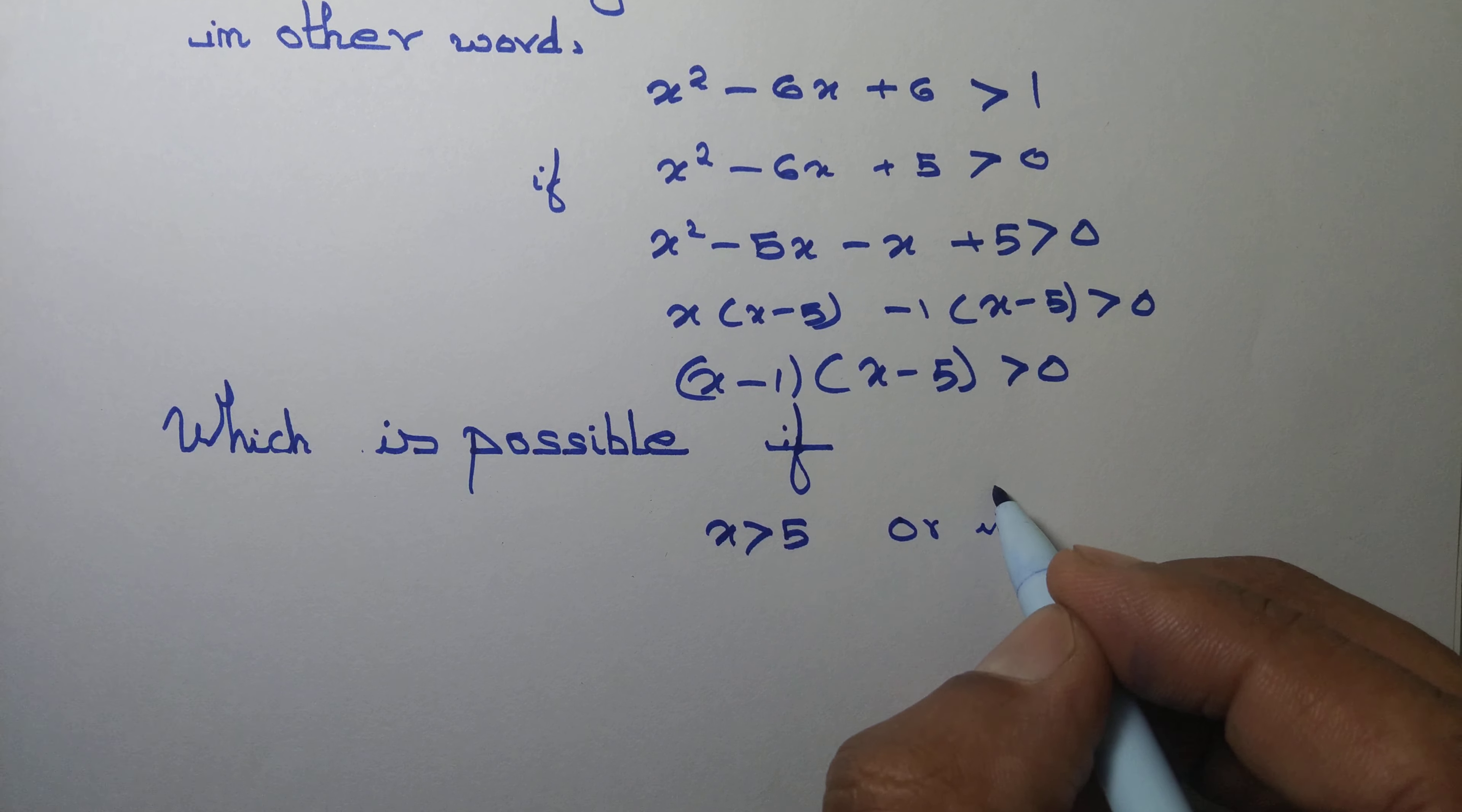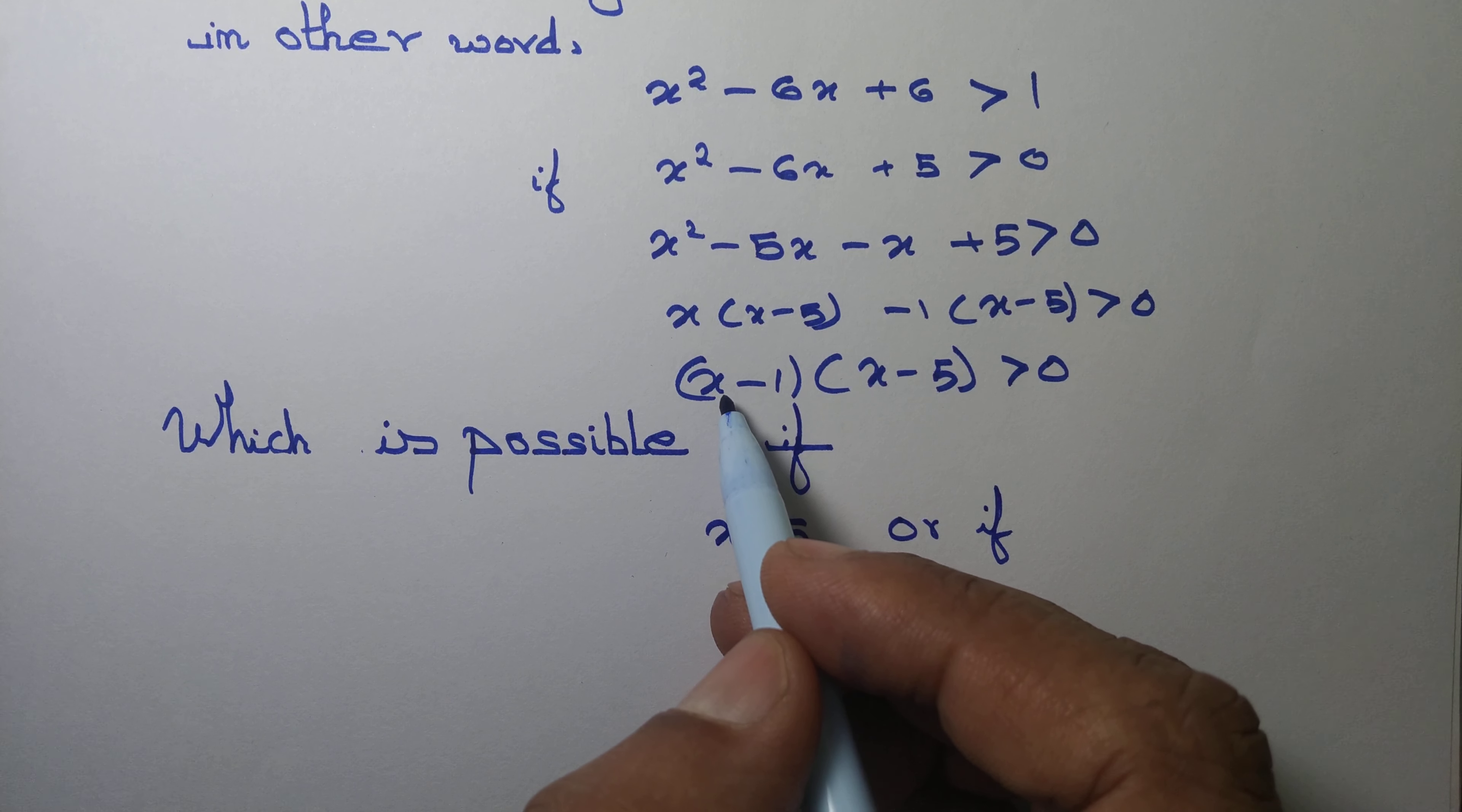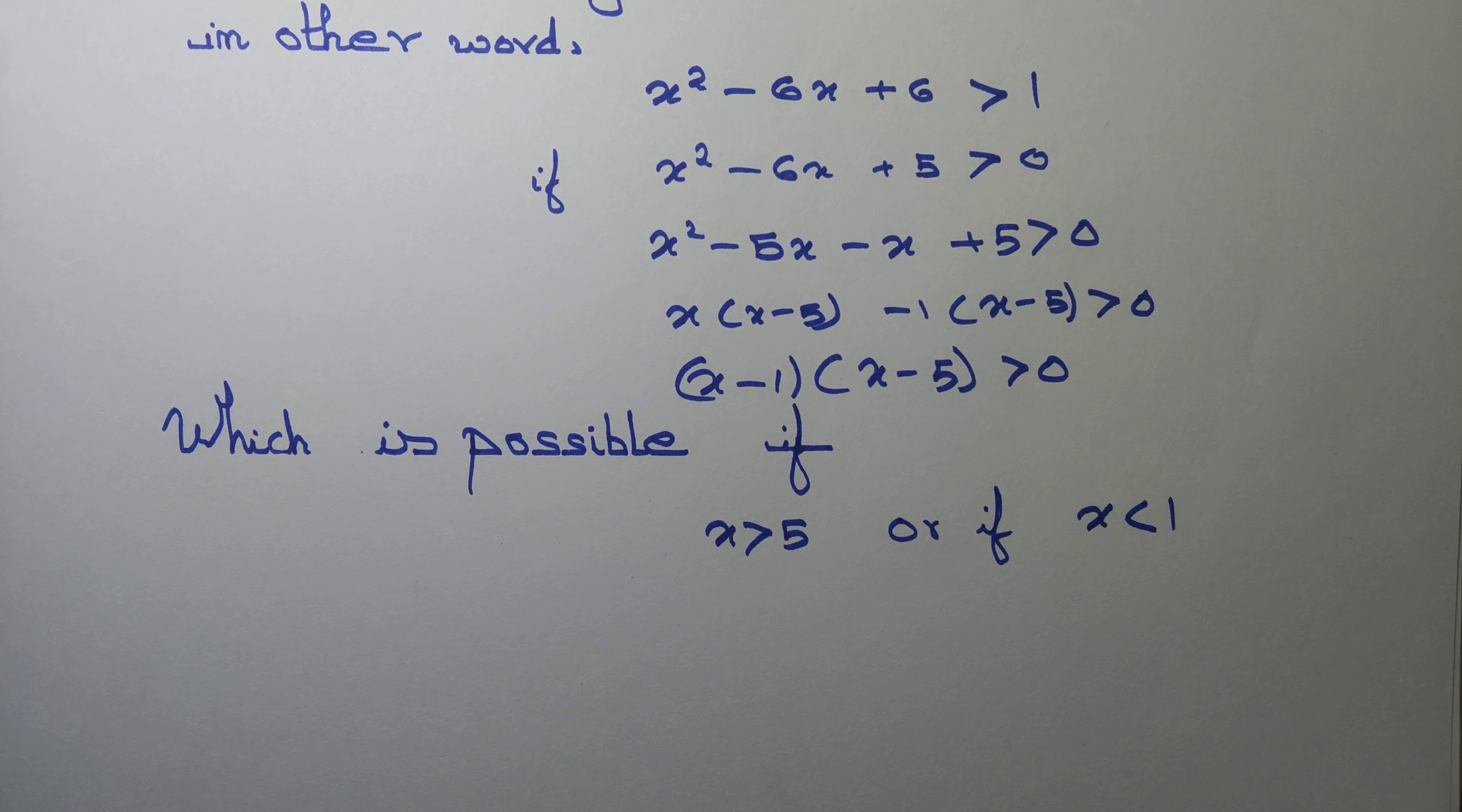Or if I take any real number x that lie between 1 and 5, this quantity will be negative, this will be positive. So I cannot take any number that is lying between 1 and 5. But if I take x less than 1, then this is negative and this is also negative and negative into negative is positive.